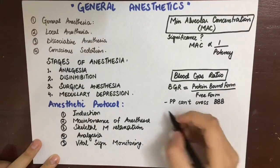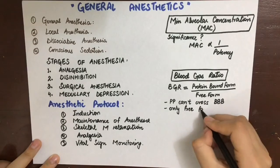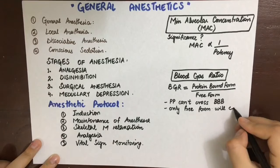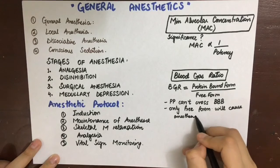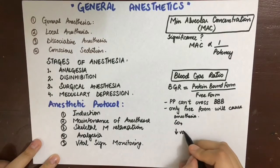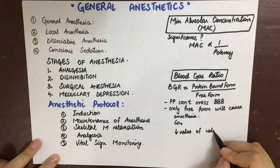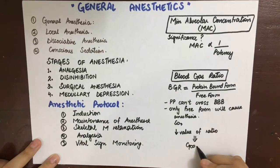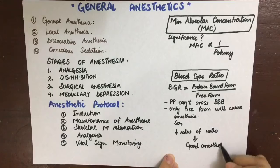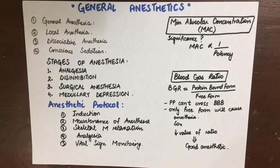We know that plasma proteins cannot cross the blood-brain barriers. So whatever amount of the anesthetic that is attached to the plasma proteins cannot cause anesthesia. So the more the free form, the more the free molecules are available to maintain the equilibrium with the brain and cause anesthesia. So decreased value of the ratio means the anesthetic is better.